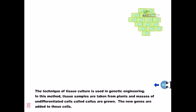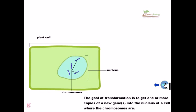The technique of tissue culture is used in genetic engineering. In this method, tissue samples are taken from plants and masses of undifferentiated cells called callus are grown. The new genes are added to these cells.